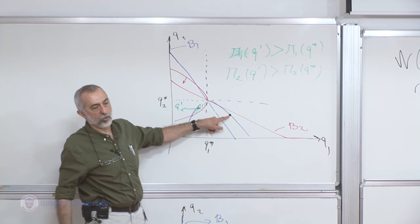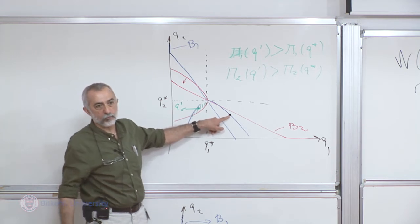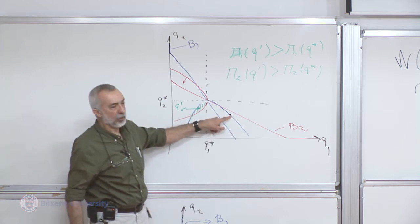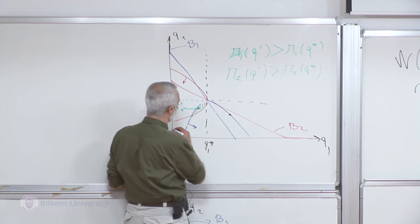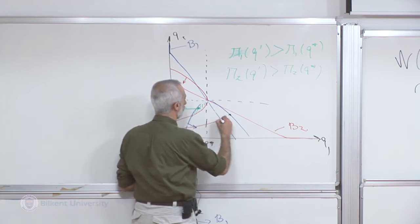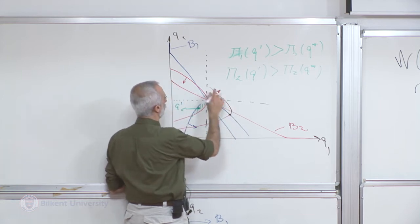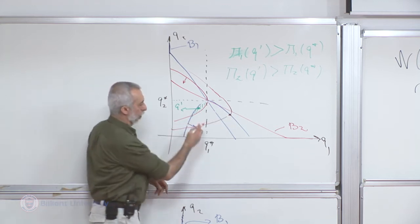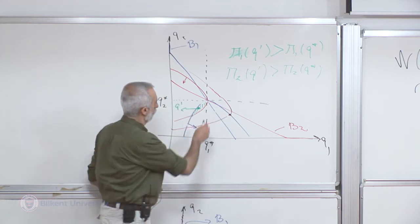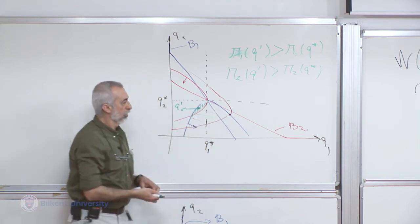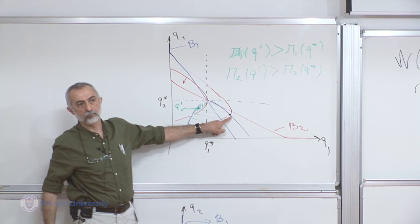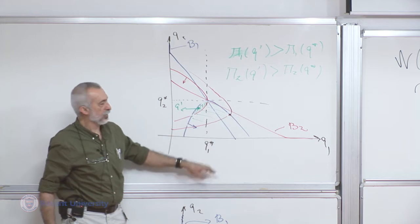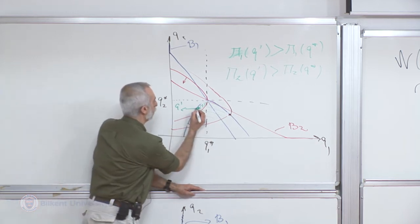The best thing to do is draw the indifference curves — the isoprofit curves of both firms through this point. We already have the indifference curve of player one. Drawing the indifference curve of player two through the same point, any point in the intersection region Pareto dominates this point. So this point is not Pareto efficient.